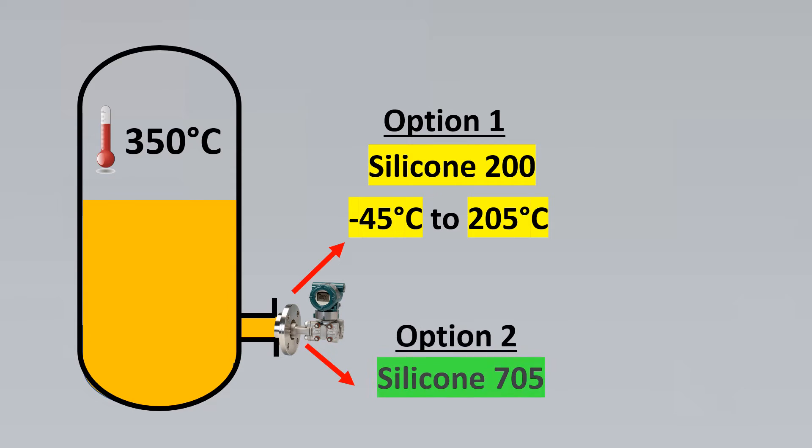So we had to go for another option that was the option of Silicon 705 which had the range from 20 degrees Celsius to 370 degrees Celsius. And hence this was able to satisfy our process needs.